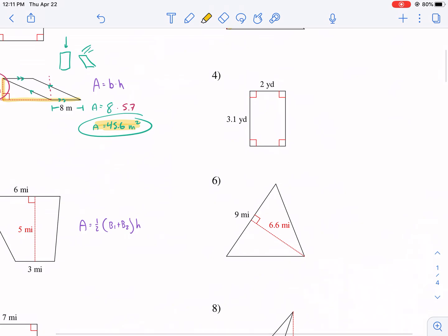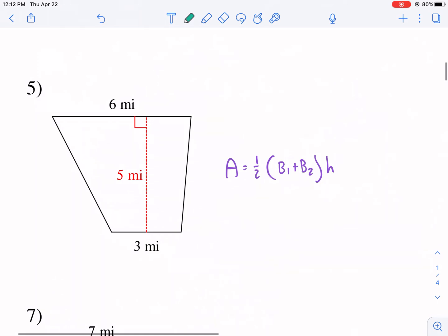Another rectangle problem, just multiply as we learned before, 2 times 3.1. And we're going to get 6.2 yards squared here. Rather simple. But let's go on to our next shape.